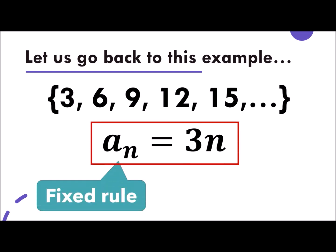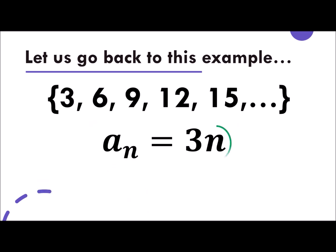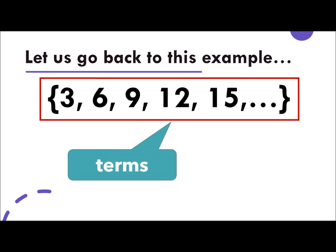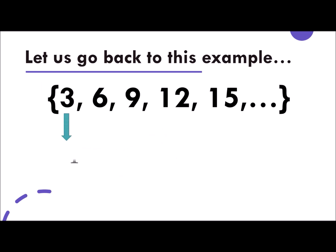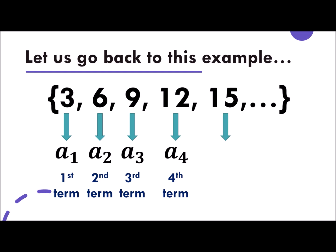A sub n is equal to 3n. The whole part of it is now pertaining to the fixed rule or the general rule of a sequence. And the n here pertains to the n term. This set of numbers are what we call terms of a sequence. Specifically, it has a symbol. 3 will be a sub 1 pertaining to first term. 6 will become a sub 2, that is the second term. 9 will be symbolized as a sub 3 or the third term. 12 a sub 4 as fourth term. 15 a sub 5 as fifth term. As the pattern continuous, the general symbol is a sub n, which is pertaining to the nth term. I hope that is very clear with you.